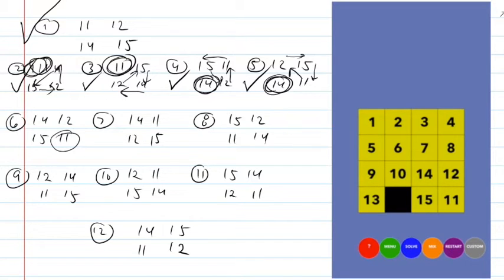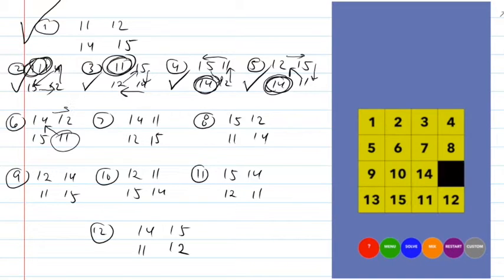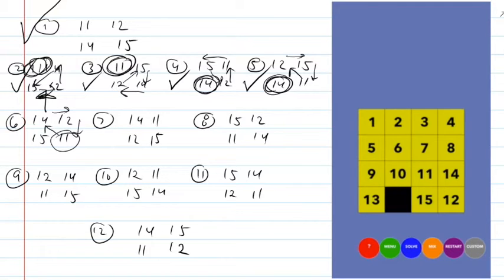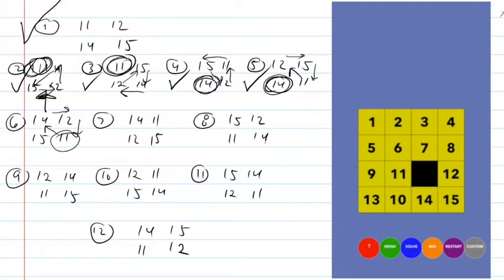Since the eleven is on the edge, I can easily get it to where the fourteen is by moving the fifteen over, allowing a counterclockwise three-cycle. Now case six has turned into case two. The eleven is already in the right spot, so I finish by cycling those tiles around. It takes about ten moves instead of five — it basically converted from case six into case two.